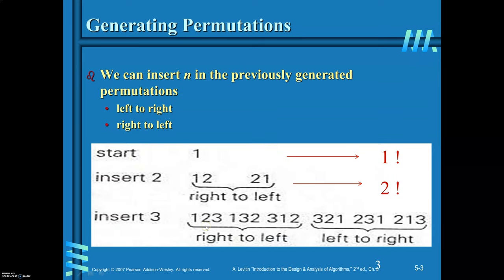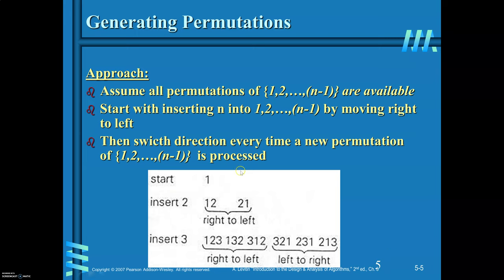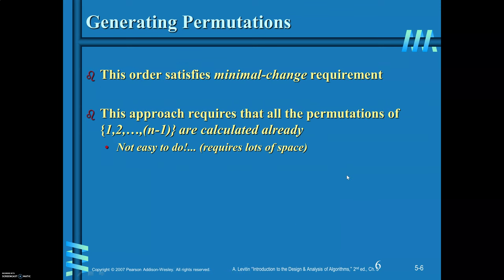In general, assume all permutations of {1, 2, ..., n-1} are available. Insert the nth element from left to right, then switch direction every time a new permutation of {1, ..., n-1} is processed. This satisfies the minimal change requirement. However, to find n!, you need to store all (n-1)! permutations, which is a tedious task that requires a lot of space.